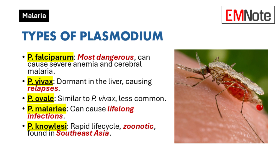Similar to Plasmodium vivax, Plasmodium ovale can also cause relapses due to its dormant liver stage. However, it primarily infects individuals with the Duffy blood group, making it less common in certain populations. It is mostly found in West Africa and the Western Pacific Islands.